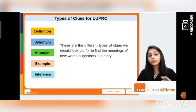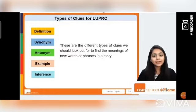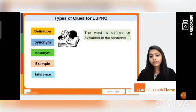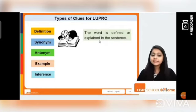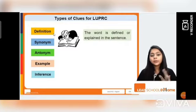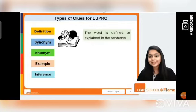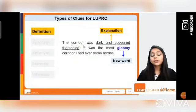The first clue type is a definition, where the word is defined or explained in the sentence itself. When you have the definition of the word given in the text, you need not go to a dictionary. Let's take an example.